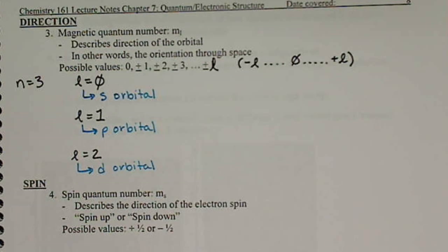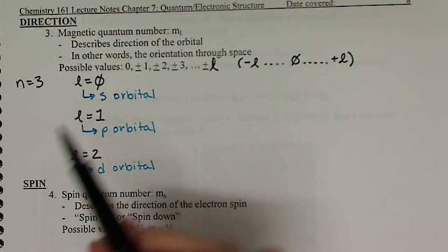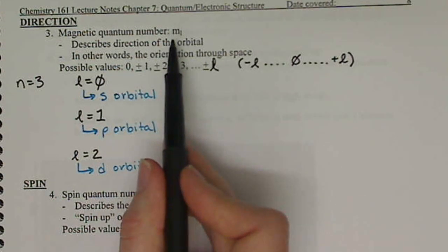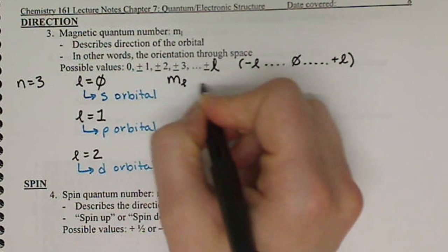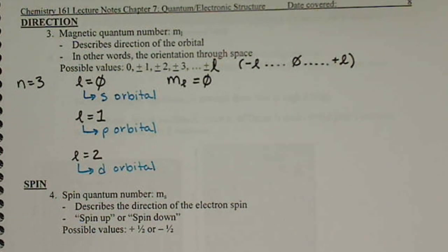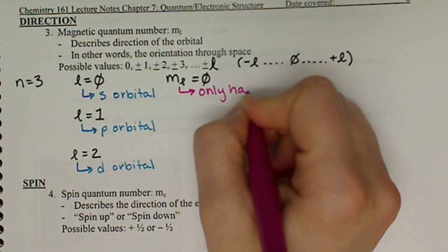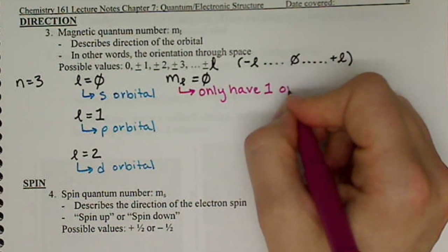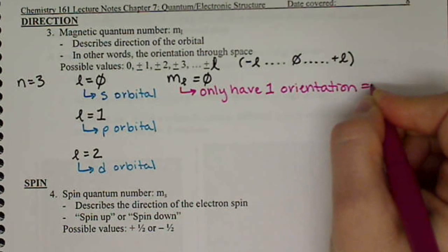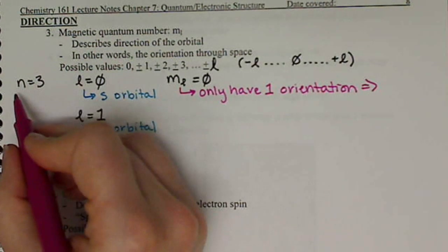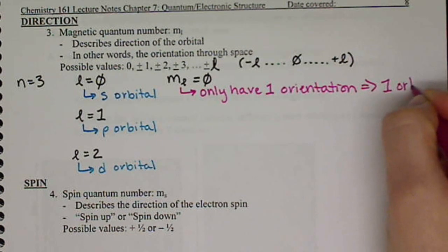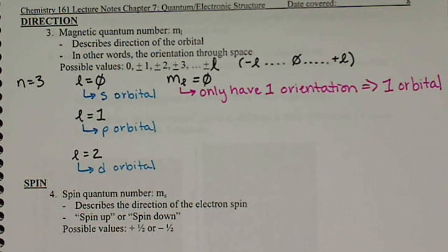Now, when we look at orientations, this means essentially how can we flip-flop things? How can we rotate things in three dimensions? When l equals zero, our only possible value for m sub l is zero. So that means we only have one orientation. When we have an s orbital in a certain quantum level, we only have one orbital. Which makes sense because if we have a sphere, if we rotate it around, we still have a sphere. The shape doesn't change.